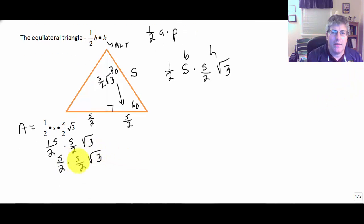Well, S times S is S squared. 2 times 2 is 4, square root of 3. So the area of an equilateral triangle is side squared over 4 times the square root of 3.